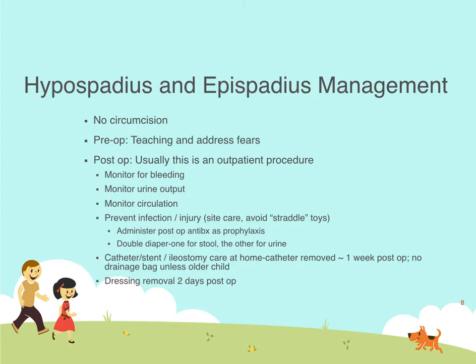Prevent infections at the surgical site. Because they are going home with a catheter temporarily, we want to make sure they keep it clean — many of these kids when repaired are still in diapers. So we have them double diaper: one diaper is directed more towards stool to minimize exposure to the urethra, and the other is for urine. This is especially important once the catheter is pulled. Many times these children are sent home on prophylactic antibiotics.